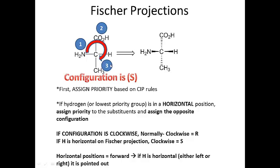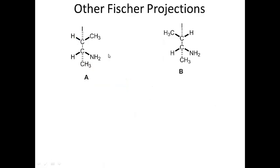If the hydrogen is on a horizontal line and the configuration appears clockwise, you reverse it. So normally this would be R because the groups are oriented clockwise, but because hydrogen is on the horizontal line, the actual configuration is S. This reversal only applies to Fischer projections and only when hydrogen is on a horizontal line — it does not apply to other depictions of chiral centers.